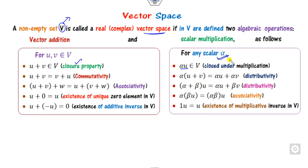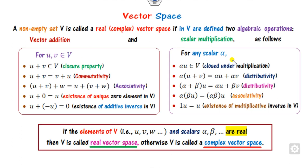Look at these closure properties. If all elements u, v and the scalars are real, then we call it a real vector space; otherwise we call it a complex vector space.